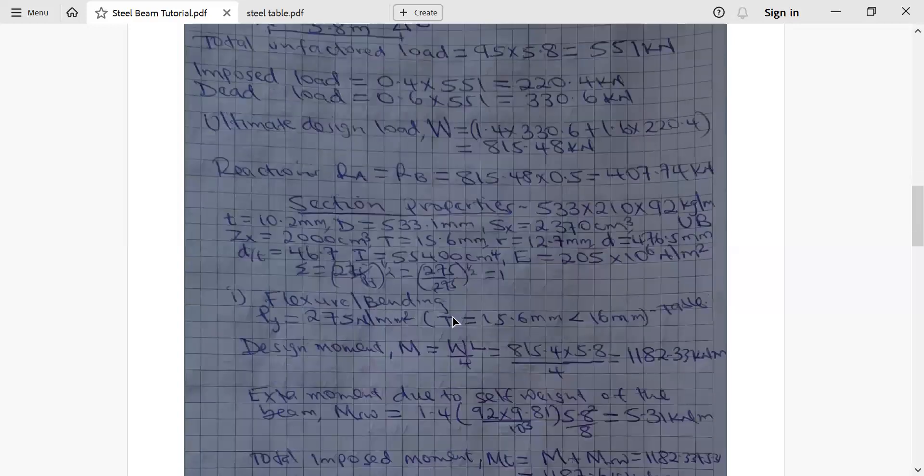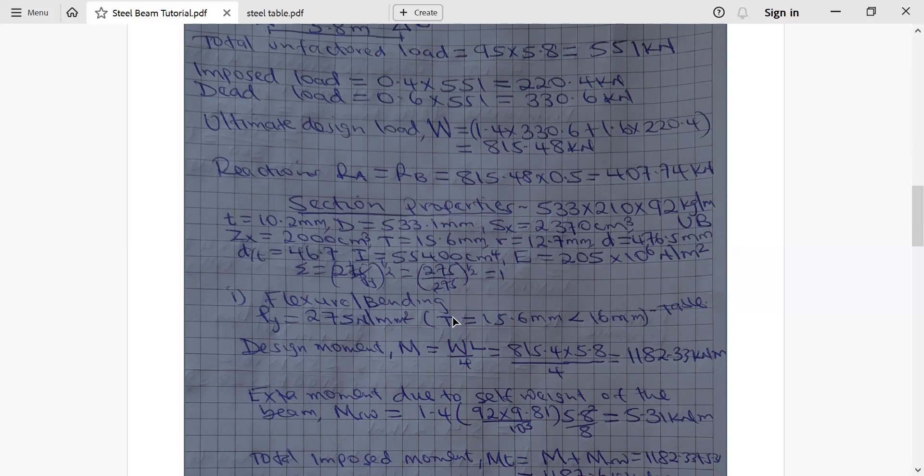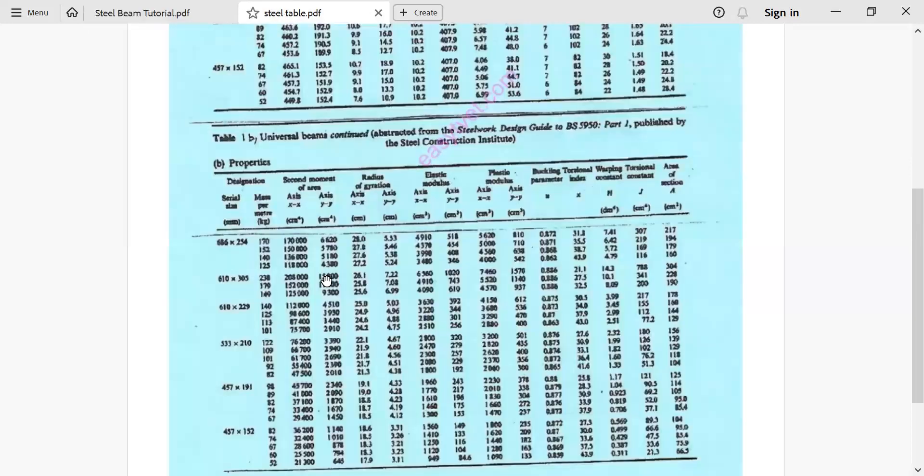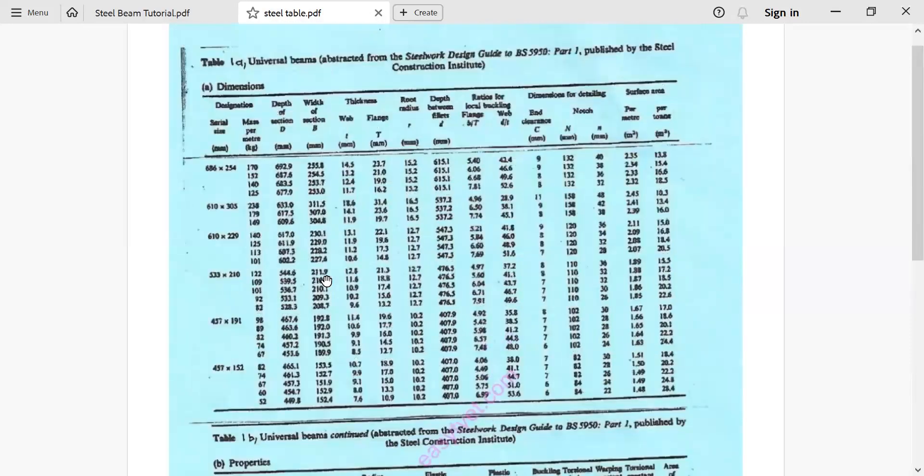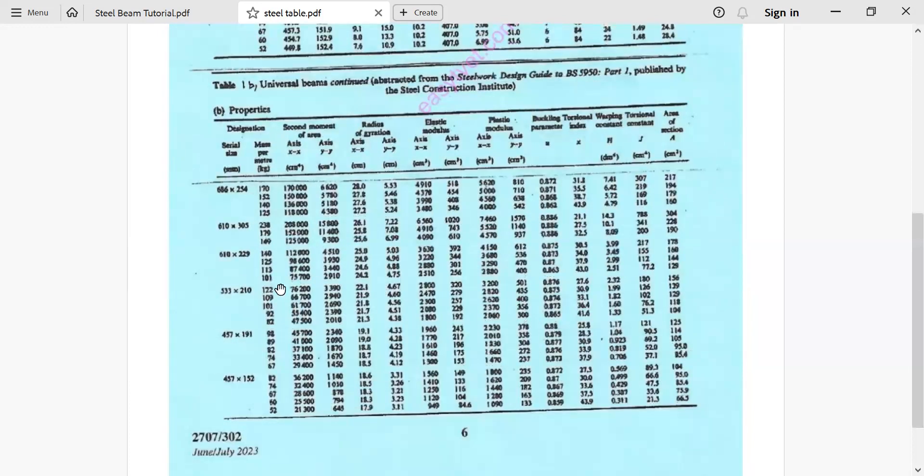And from there we move to section properties. For section properties we use tables. We obtain them from the table. So this is the table. We have two tables. We move along 533 times 210 times 92. So all properties that are required you see I've brought there. You move along 92. You obtain what is relevant or what is required of you. You obtain a property as simple as that from these tables.